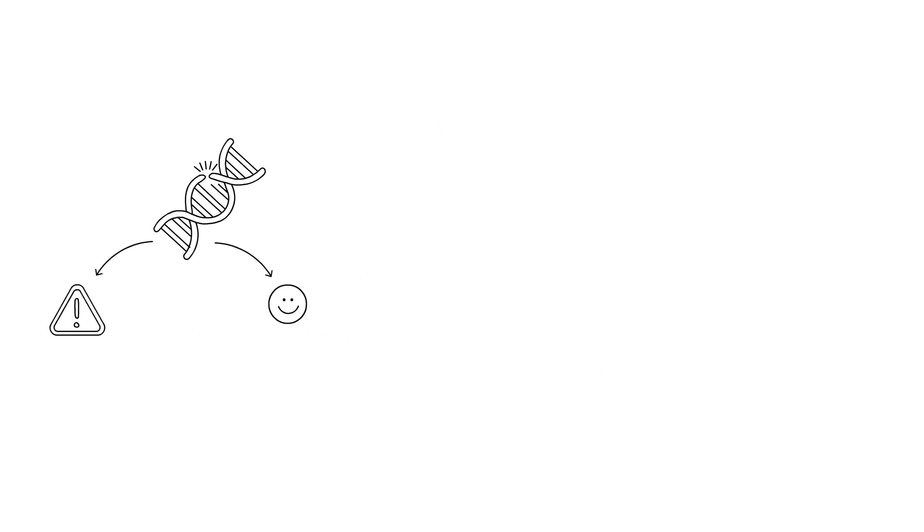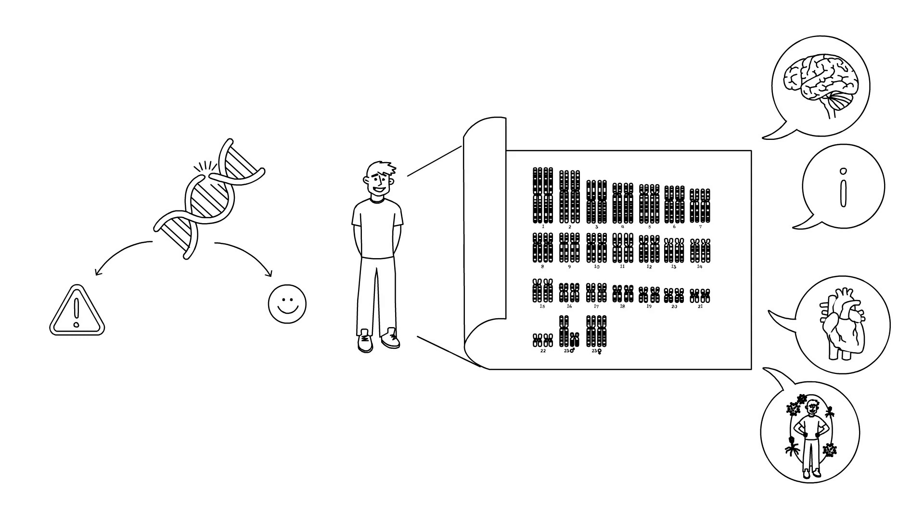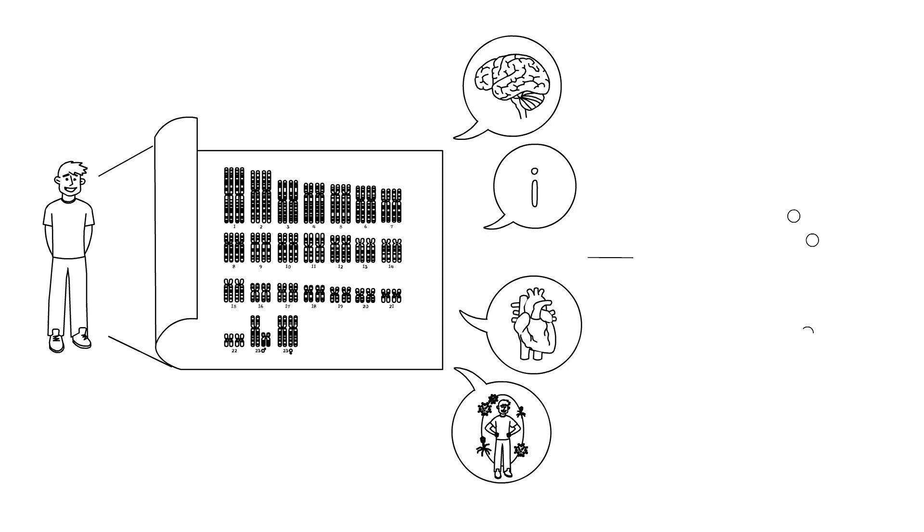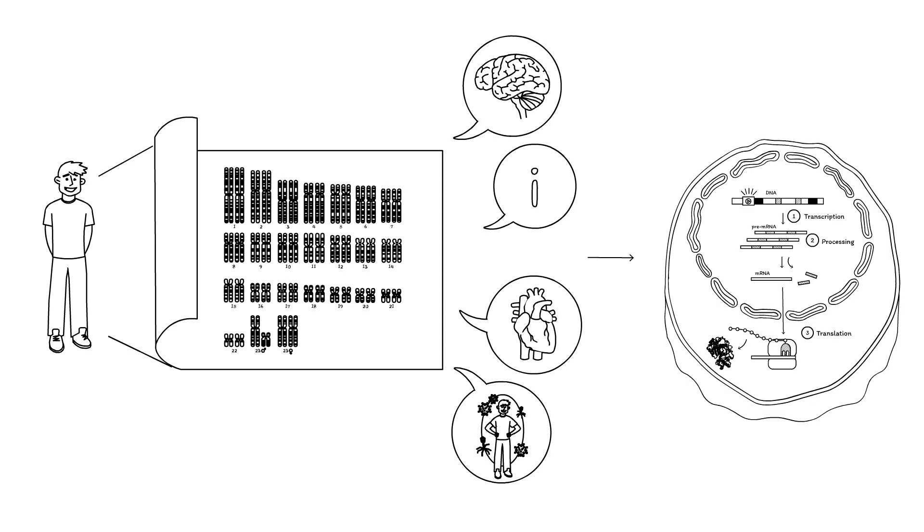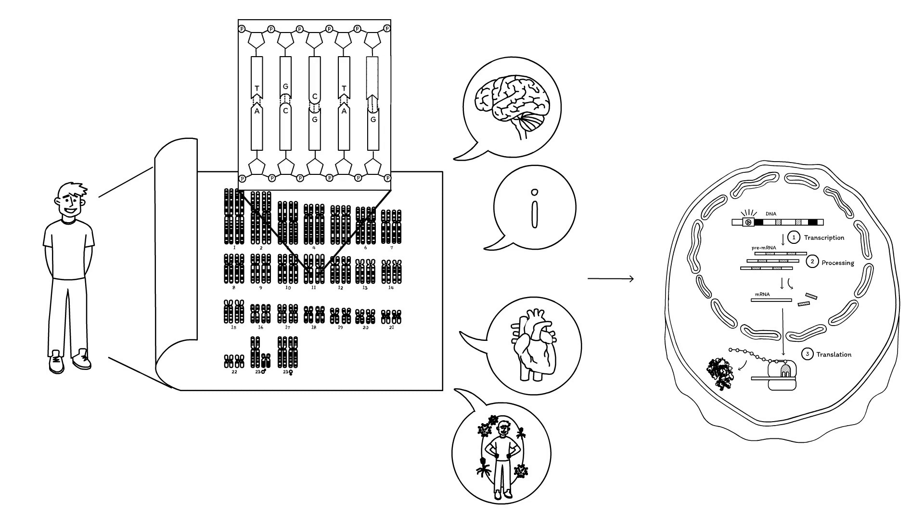So when is a genetic variant harmful and when is it not? By now, we know that our genome holds important information for all biological processes to enable the production of RNA molecules and proteins. This information is encoded in specific sequences, which genetic variants may disrupt. Let's take a look at some examples of how this happens.